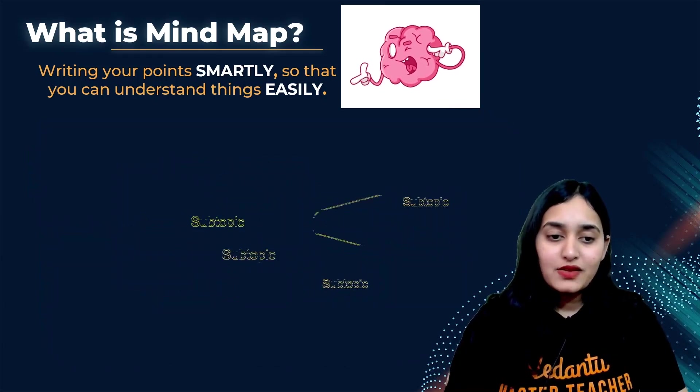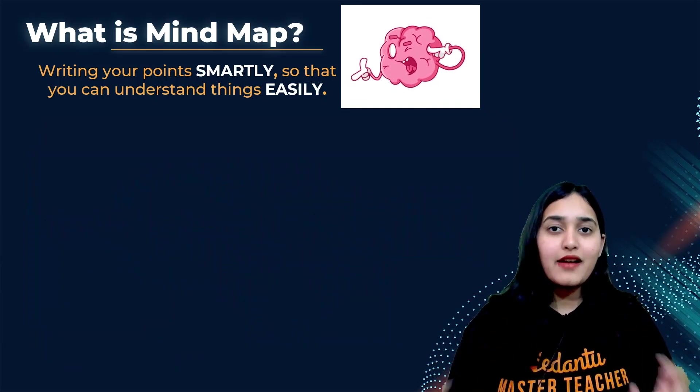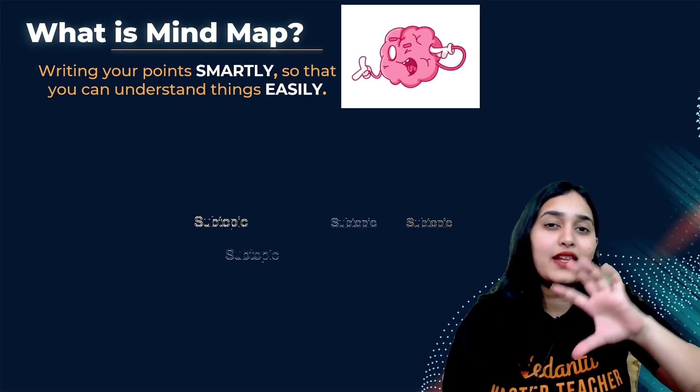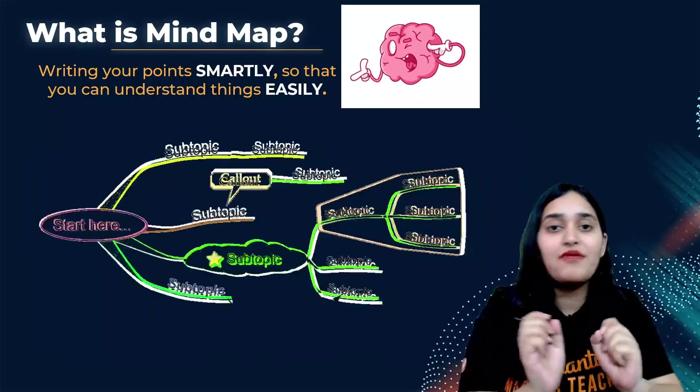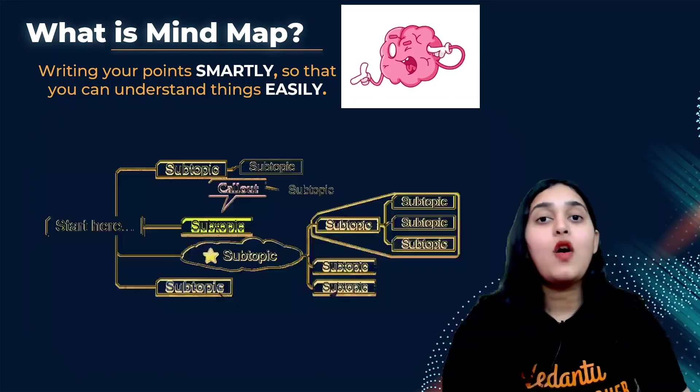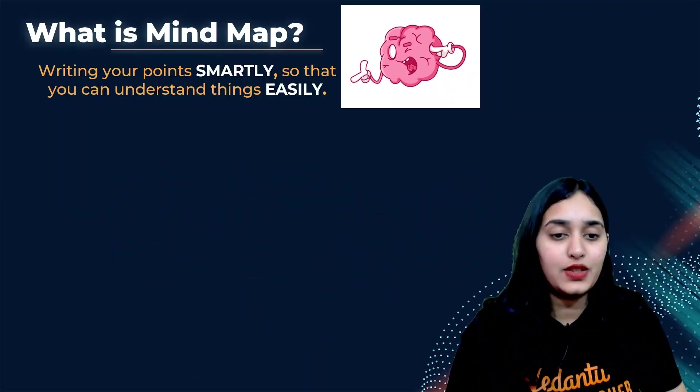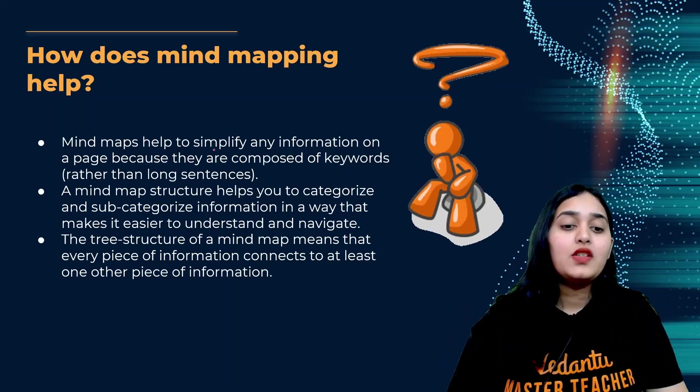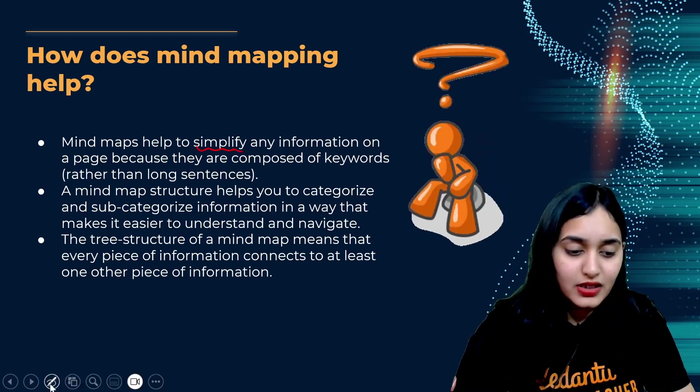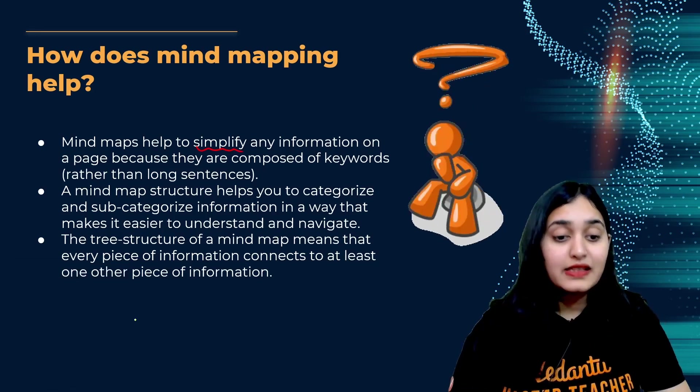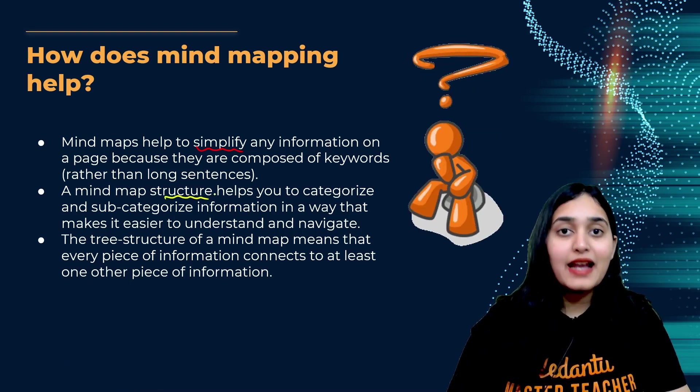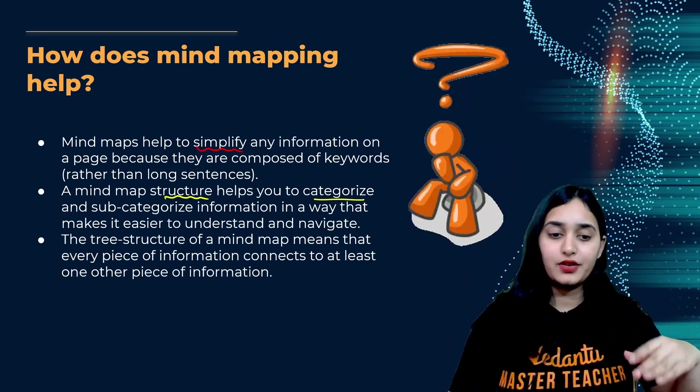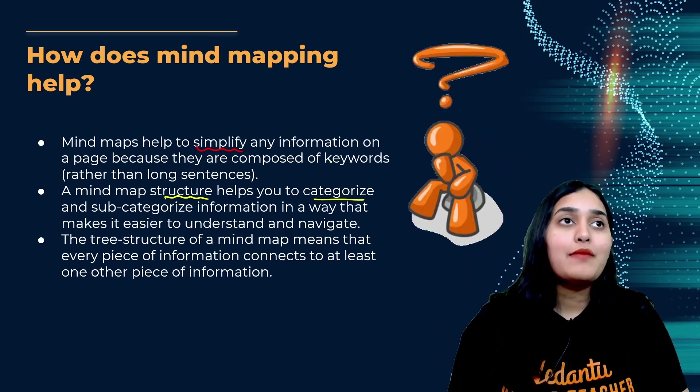Let's start with how can mind maps help us and what are they basically. So mind map is just like a rough diagram we make which basically tells us very smartly or in a very crisp and brief manner that what all things have we learned, how are they related to each other. Now how does it help us? So it basically simplifies the information given. Next it gives a structure and it helps you categorize things that okay, this is related to that topic, that is related to this topic.